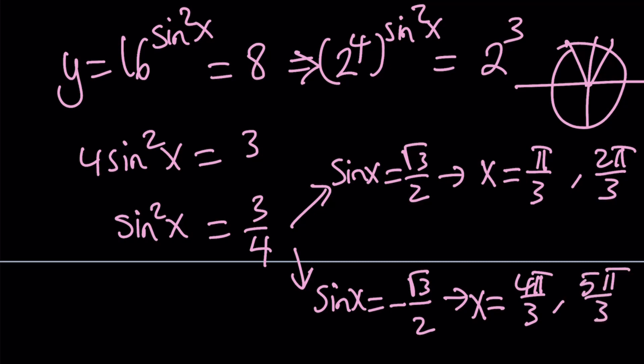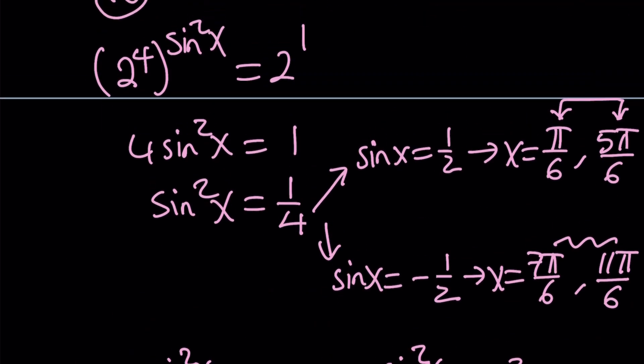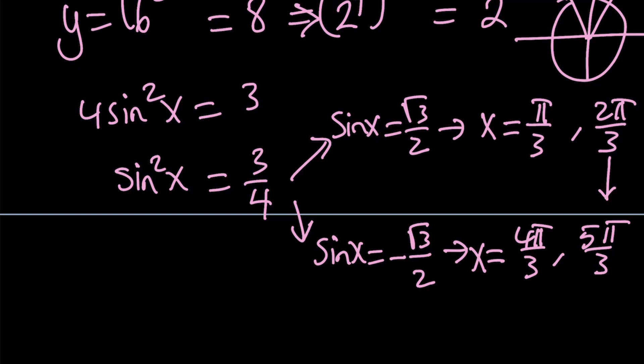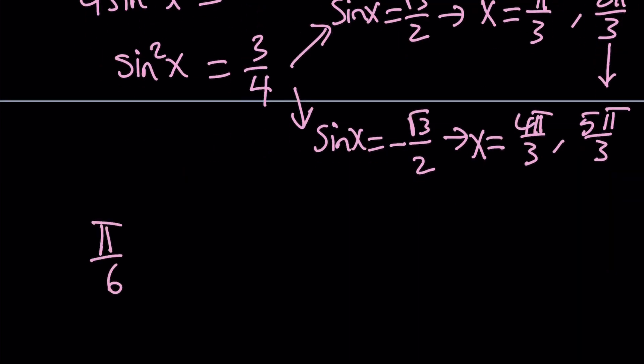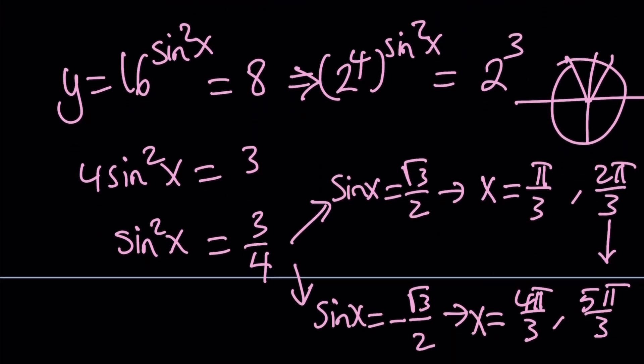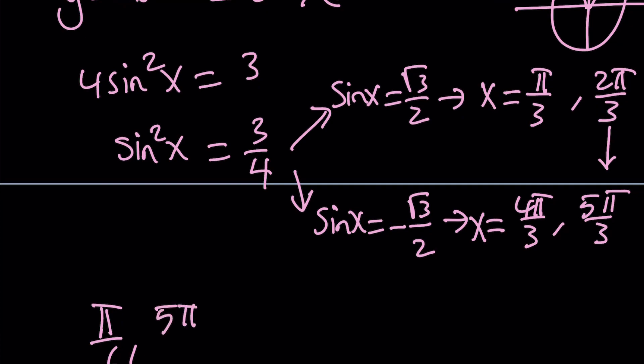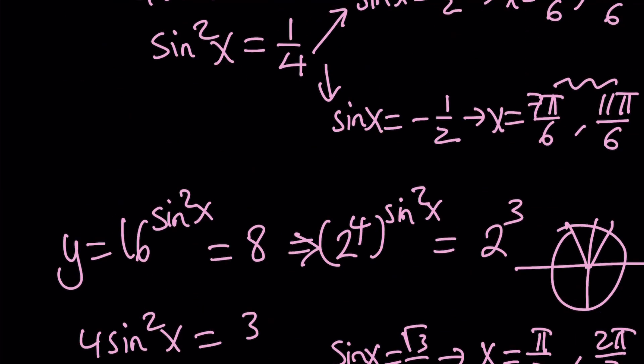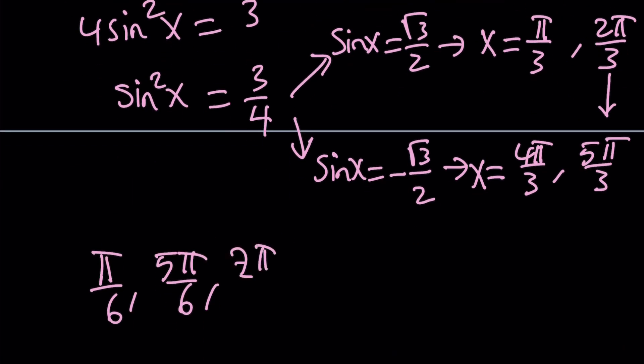Or you can add π to 2π/3 to get 5π/3. So those are the 8 solutions that we got so far. Let's list them. We got π/6 and 5π/6, and then we got 7π/6 and 11π/6.